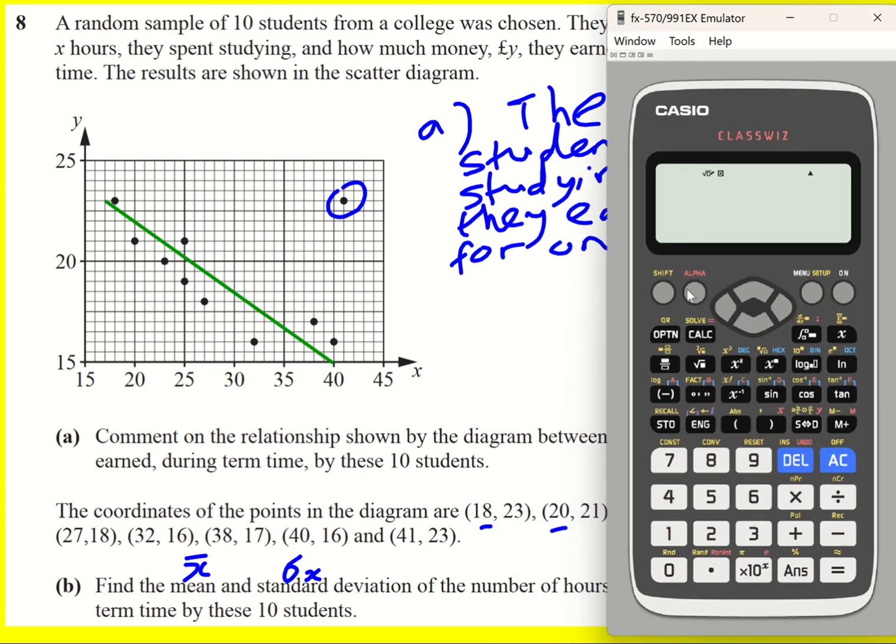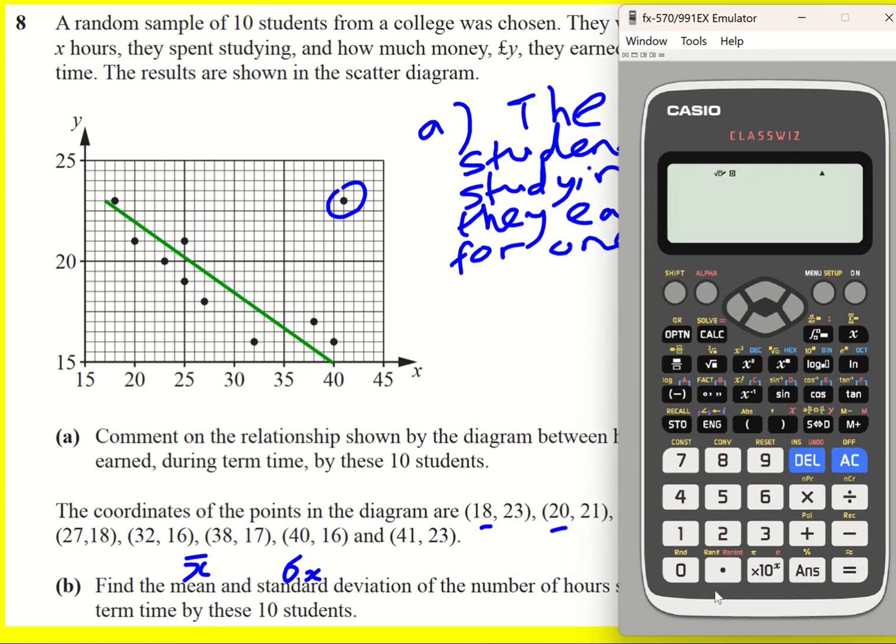Now you can do this the long way which is to use the formula, but this question is only two marks. It's expecting us to put it into our calculator using the statistics function. And it's one variable because we're not interested in the y.